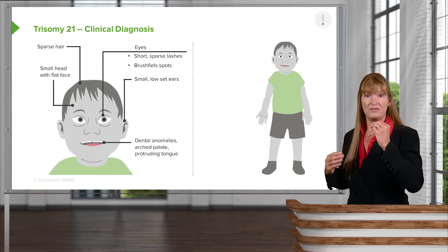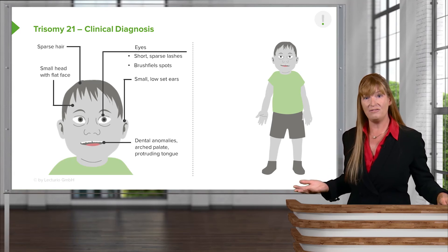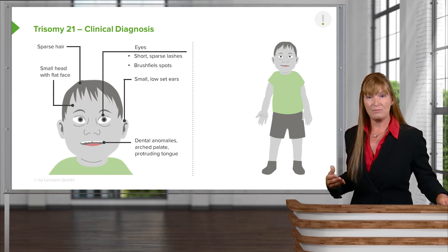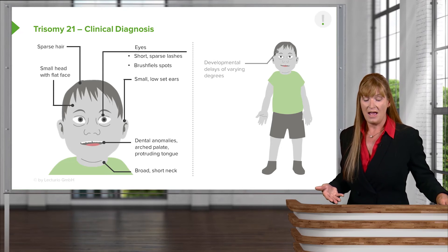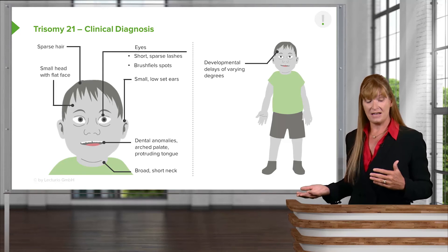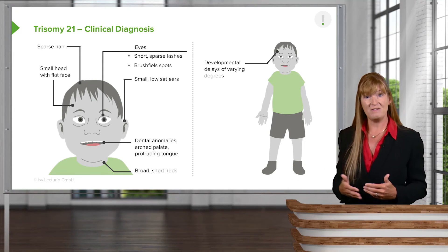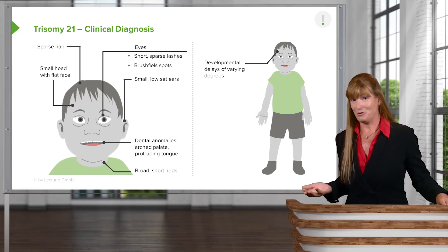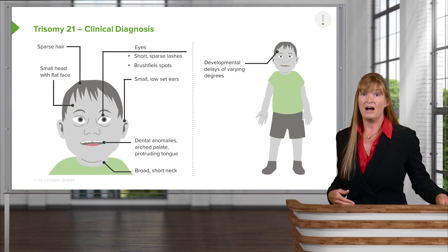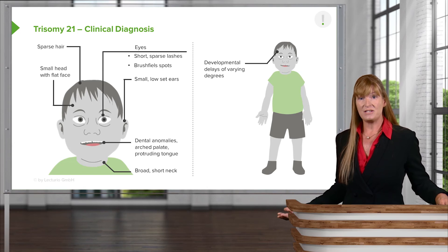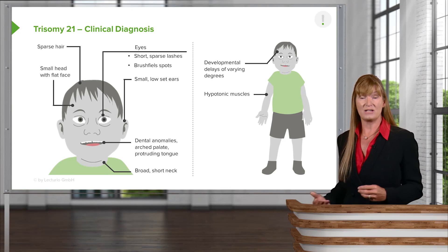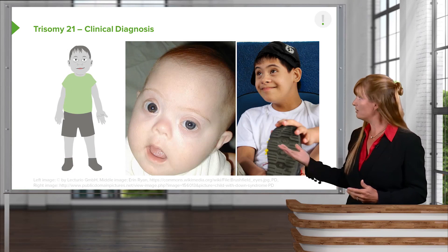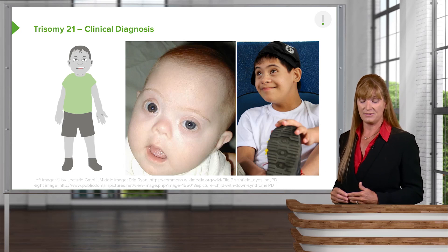The palate is slightly arched and often there is a protruding tongue. Not all of these symptoms will necessarily display, but Down syndrome does have a pretty consistent manifestation, including a broader, shorter neck. Developmental delays are fairly varied — they might be fairly extreme or fairly mild — and we're not entirely sure why, as many conditions are multifactorial. Environment and nutrition may have an impact. Down syndrome patients also have hypotonic muscles, meaning they don't develop full contraction strength.